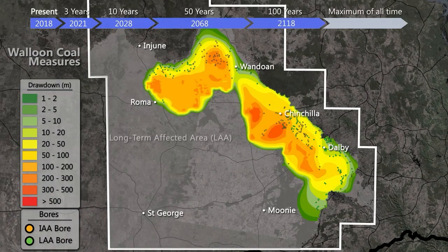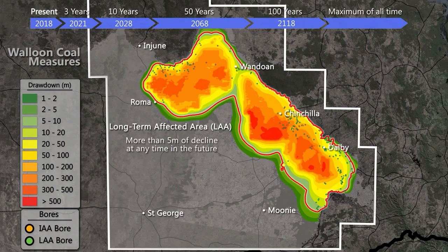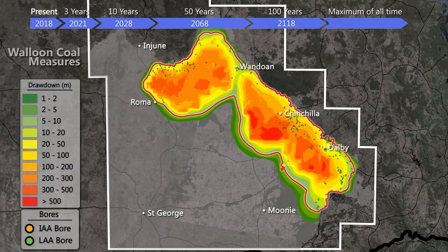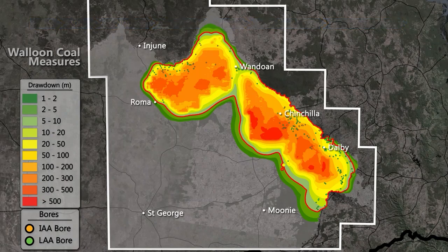The Long Term Affected Area, or LAA, is the area where more than five metres of decline is predicted to occur at any time in the future. The Walloon coal measures has the greatest predicted impacts in the Surat Basin, with declines of more than 500 metres predicted.